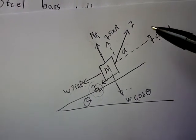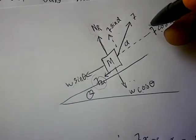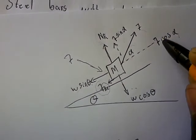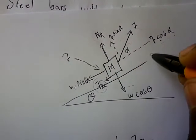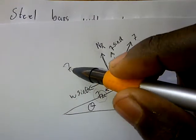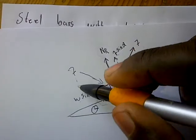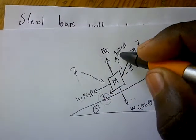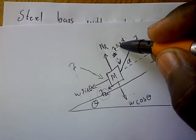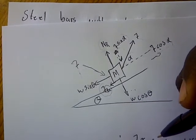Now let's consider if the body is being pushed instead of pulled. If the body is being pushed, f·cosα remains because the body is still going upwards. However, the vertical component of F now points downwards, so the normal reaction becomes w·cosθ plus f·sinα.